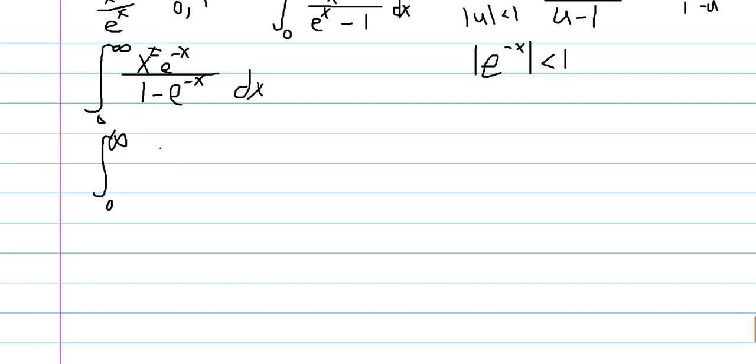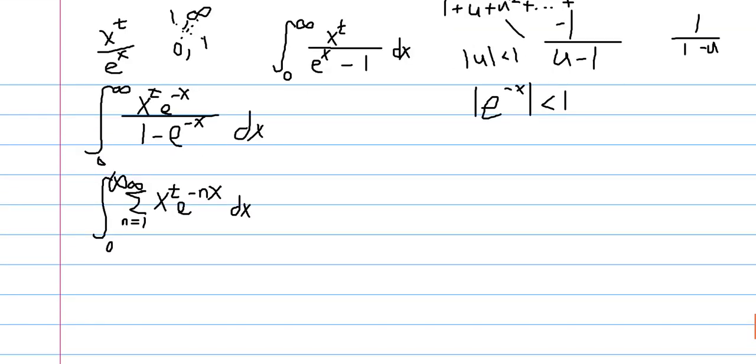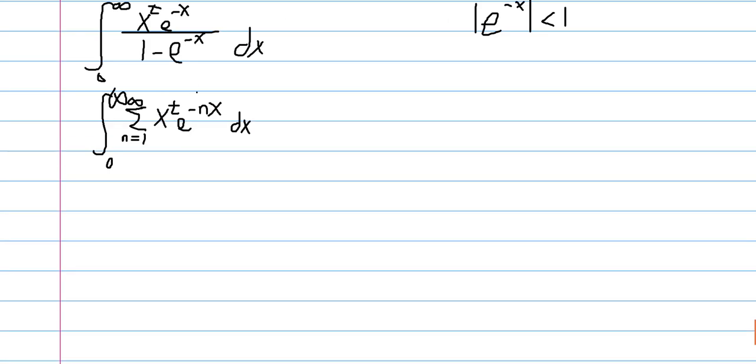And when all is said and done, we get the integral of x to the t times the sum, or really I should, I'll just bring the x to the t inside the sum. Let's say n goes from 1 to infinity of x to the t, e to the negative nx dx. And the reason why we start at 1 and not 0 is because we have an extra factor here, so I'm just incorporating that into the sum.